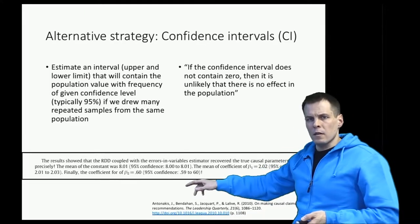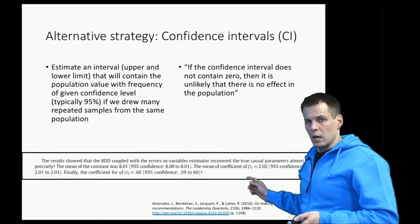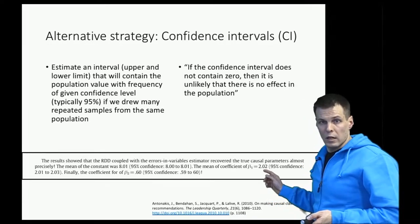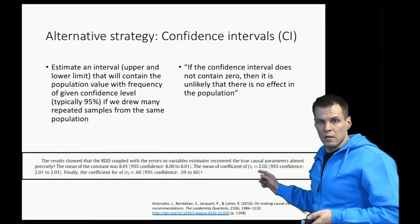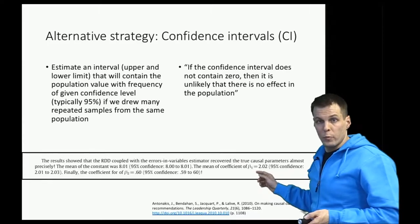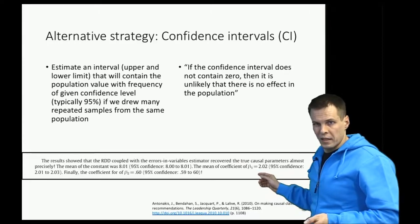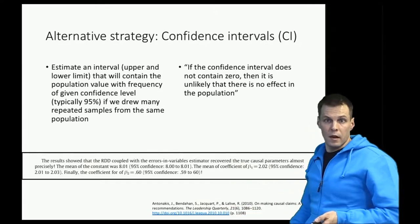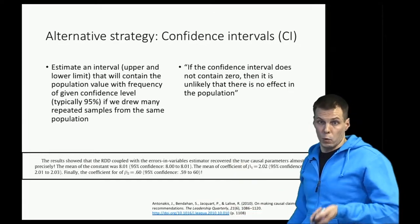These intervals can also be used the same way as a null hypothesis significance test. You can compare whether zero is included in the interval. The interval here is 2.01 and 2.03. Zero is not within the interval, and therefore we say that it's unlikely that the population value would be zero.